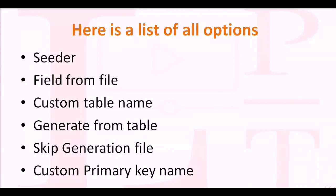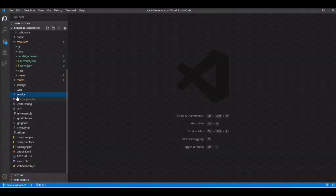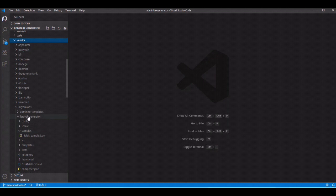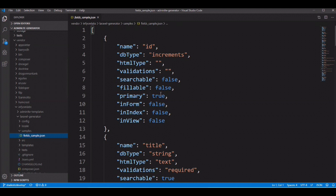Let's check the second option: fields from file. We are generating scaffold using the command line, but if you want to generate a scaffold from a file, you can do it. If you have a schema file, it can be used with the generator rather than entering the schema from the console. You can find a sample file at vendor/infyom-labs/laravel-generator/samples/field_sample.json.